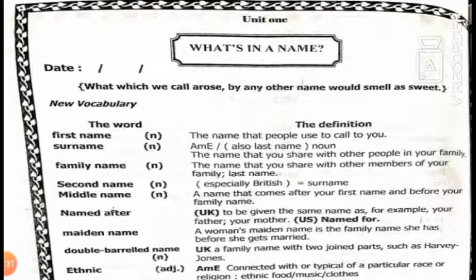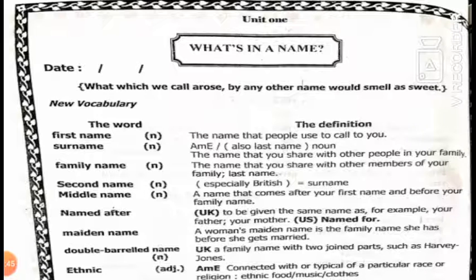The next word is 'named after,' which means to be given the same name as your father or your mother. Pay attention: 'named after' is used in the United Kingdom, but 'named for' is used in the United States, but they have the same meaning. For example, she was named after her grandmother — it means she was given the same name as her grandmother.